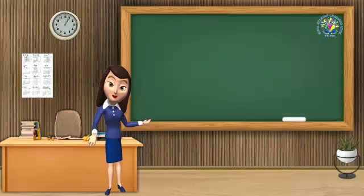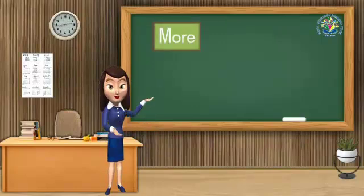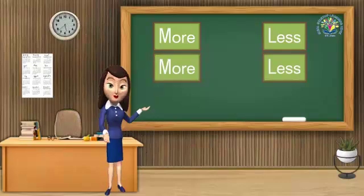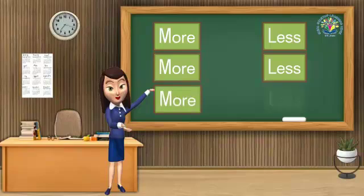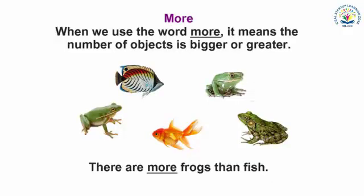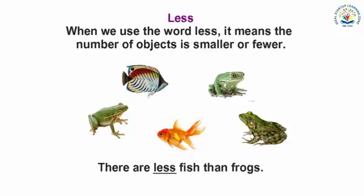Students, now you will repeat these words with me: more, less, more, less. When we use the word 'more' it means the number of objects is bigger or greater. As you can see in the picture, there are more frogs than fish. When we use the word 'less' it means the number of objects is smaller or fewer. As you can see in the picture, there are less fish than frogs.